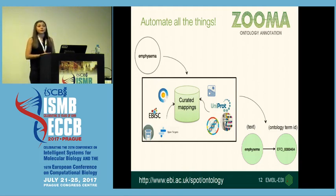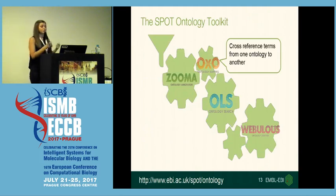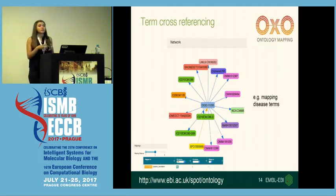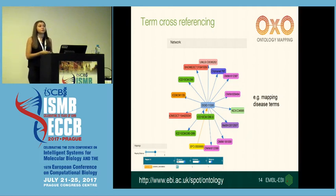Now, Zooma might not always find a mapping, or it might give you back a mapping to an ontology that you don't want. And that's where you'll use our second tool, which is OXO, which helps you cross-reference terms from one ontology to another. OXO is basically a graph that lets you explore term cross-referencing from one ontology to another, and it does that in two and three steps. So you can also explore cross-references of cross-references and jump from a term in one ontology to the equivalent term in a different ontology.